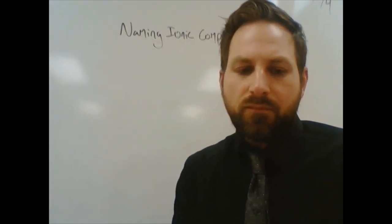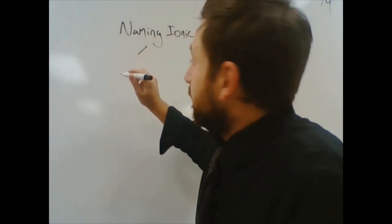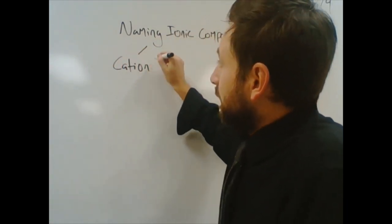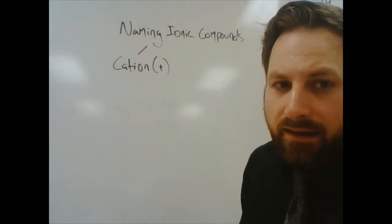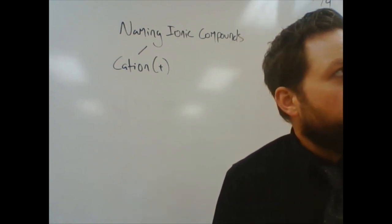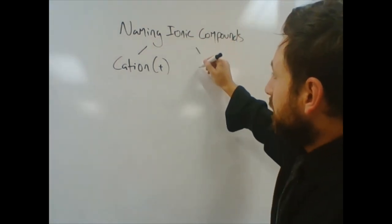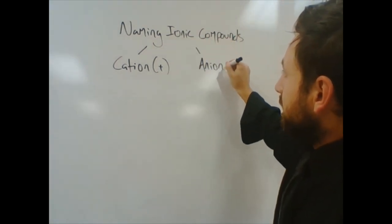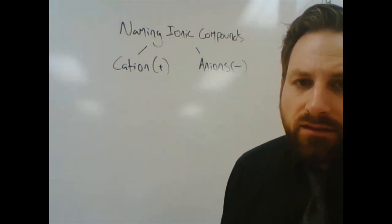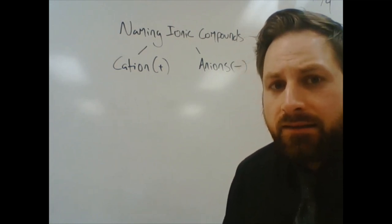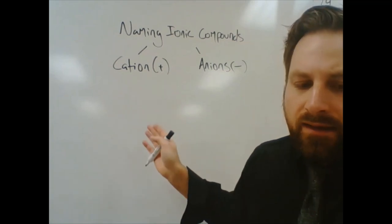So when you are naming ionic compound, you always start with a cation. Remember, cations, those are the positive ionic things. They are the metals. They are to the left of the staircase on the periodic table. On the other side, we have anions. Those are the negative charged ionic things. Those are non-metals or it could be polyatomic ions. When we name these things, though, they always go cation, anion.